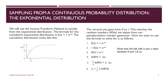Here's how we use the inverse transform method to sample values from the exponential distribution with a particular parameter. The cumulative exponential distribution is on the graph — the vertical axis is F(x), a number between zero and one, and the x-axis is values from the exponential distribution, perhaps inter-arrival times in your simulation. The formula for the cumulative distribution function of the exponential distribution is 1 minus e raised to the power of negative lambda times X.